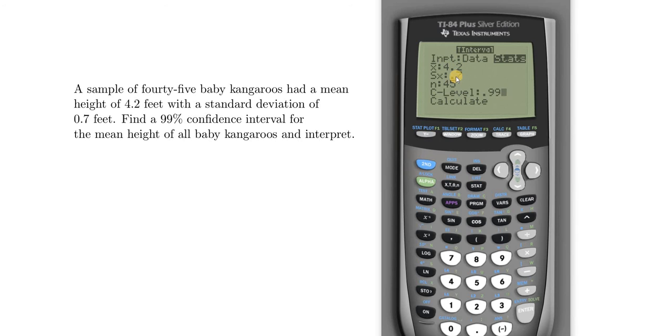All right, let's just glance at that again. So the sample mean is 4.2, the sample standard deviation is 0.7, n is 45, our level is 0.99. Let's just go down to calculate and hit the button.